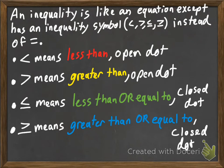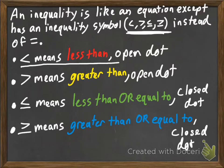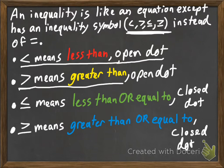An inequality is like an equation, except instead of an equal sign, we're going to have one of these inequality symbols in its place. So it's going to work almost exactly like an equation. The first symbol means less than — the left is less than the right. Whenever we graph it on a number line, it's graphed with an open dot. This symbol means the left is greater than the right, and it also uses an open dot.